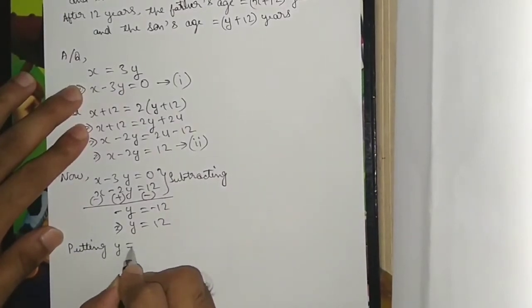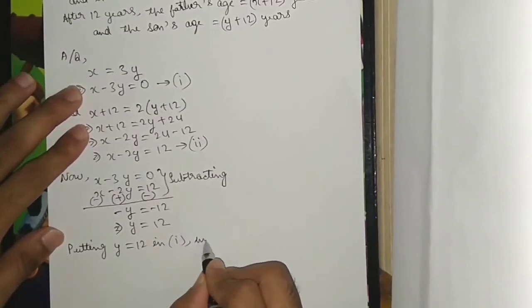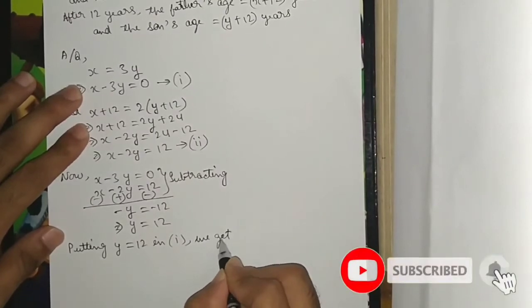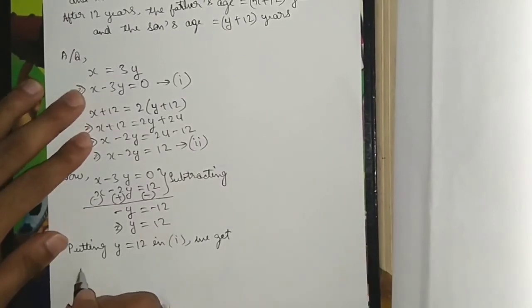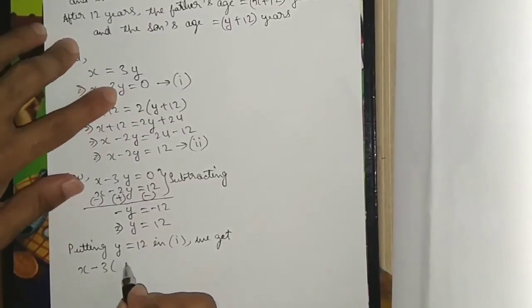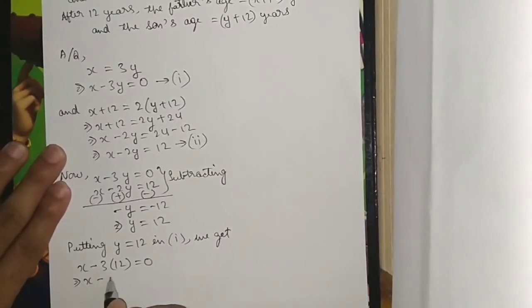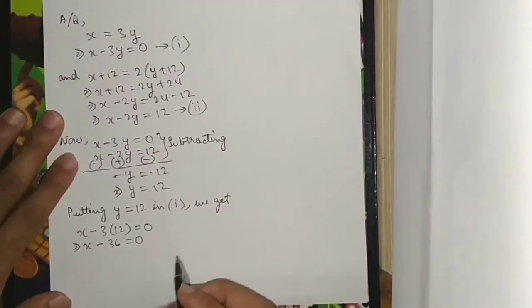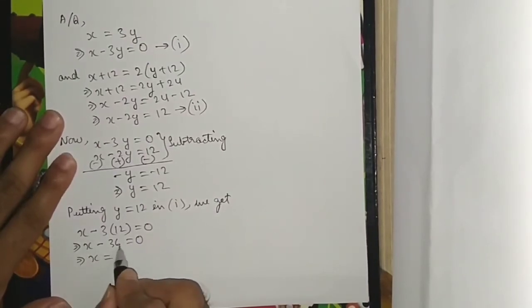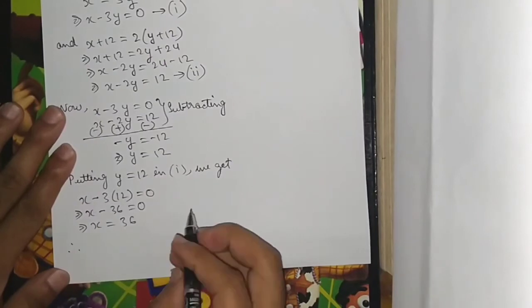Putting y equals 12 in equation 1, we get x minus 3 into 12, which is x minus 36 equals 0. This implies x equals 36.